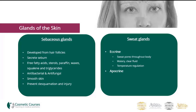The apocrine glands are slightly different from the eccrine glands in their location and function. They are found in the axilla, pubis, areola and umbilicus and come into action during puberty. They secrete a thick milky fluid which has no role in temperature control and instead is usually secreted when the body is under emotional stress.